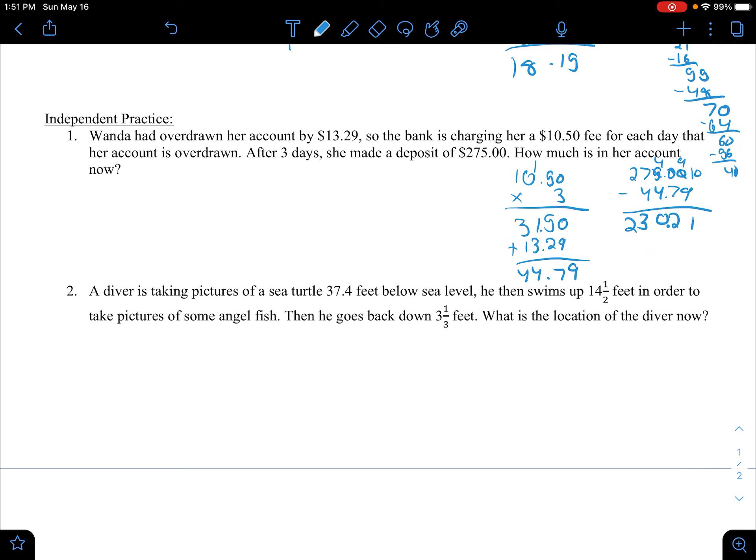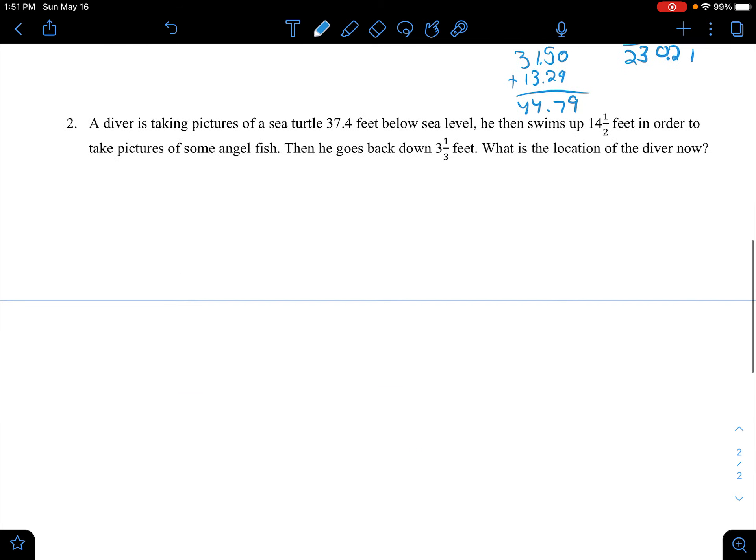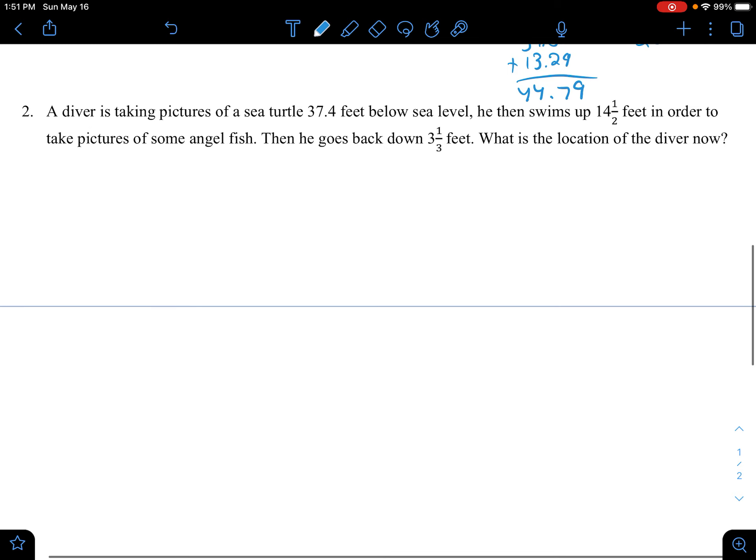So, she will have $230.21 in her bank account. A diver's taking pictures of a sea turtle 37.4 feet below sea level. He then swims up 14.5 feet in order to take pictures of some angel fish. Then, he goes back down 3 1/3 feet. What is the location of the diver now?